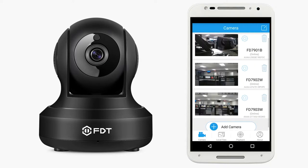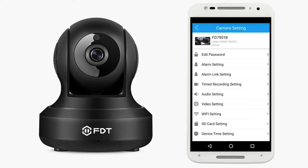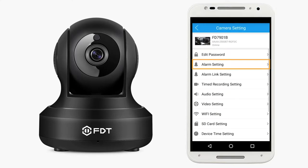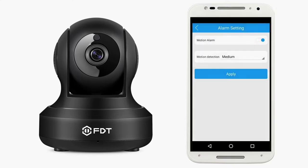In order to customize camera settings, tap on the gear icon for the desired camera. On the Settings page, you will be able to customize the following settings. Edit Password: here you can change the camera password. Alarm Settings: here you can enable or disable motion detection and adjust its sensitivity levels to either low, medium, or high.